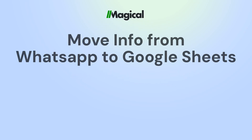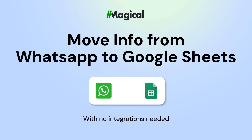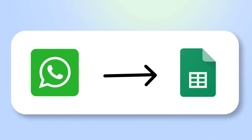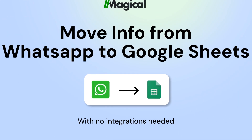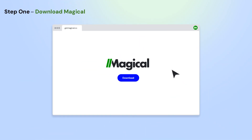Tired of copy-pasting info to Google Sheets? With Magical, you can transfer information from any app to Google Sheets without any code or integrations. It's easy. Here's how it works in three simple steps.